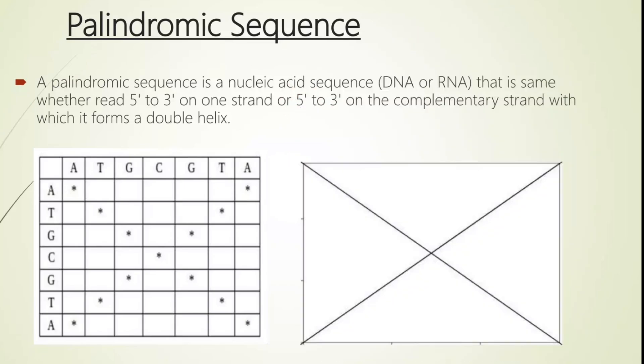But today we are going to talk about palindromic sequence, how we can recognize when some strand, say DNA, has a palindromic sequence when we compare with another one. So a palindromic sequence is a nucleic acid sequence, DNA or RNA, that is the same where they read five to three direction on one strand, or five to three on the complementary strand, with which it forms a double helix.